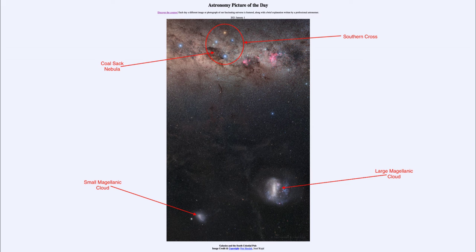One method is connecting those two stars and going down about four and a half times the distance between them. That would bring you relatively close to Sigma Octantis, which is the closest star to the south celestial pole right now.